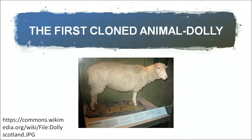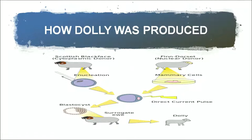Udder cells are the mammary cells of the sheep. As we can see in the diagram, in Finn Dorset the nucleus was used — the cell carrying the nucleus of the mammary cell was used — and another Scottish Blackface sheep was enucleated. These two cells were fused through a direct current pulse. That fused cell, once it started developing till the blastocyst stage — an embryonic stage of development — was put into a surrogate mother's uterus.